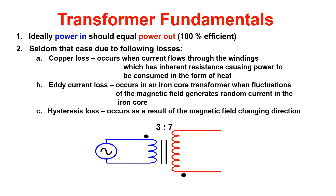Eddy current loss occurs when fluctuations of the magnetic field cause random currents in the iron core. If you watched the cartoon Ed, Edd, and Eddy as a kid, you know they did a lot of random things — a super simple way to remember this type of loss.